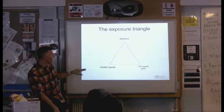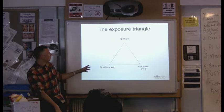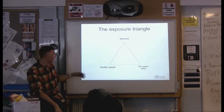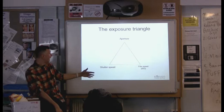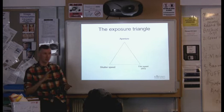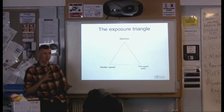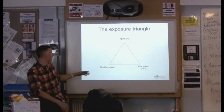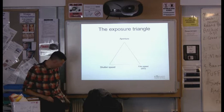This is the exposure triangle - just those three things. The one thing you need to bear in mind is that when you're taking a photograph you want optimum conditions for all three: a wide aperture, a good shutter speed to freeze motion, and a decent ISO setting so you don't get grain. But if you want to alter any of those three things, you're never dealing with one aspect on its own - they're always at the cost of the others. If you want a narrower aperture you'll have to adjust your shutter speed or ISO to maintain the same exposure.